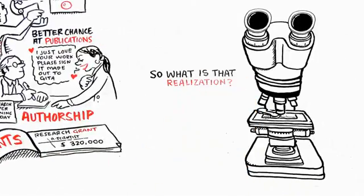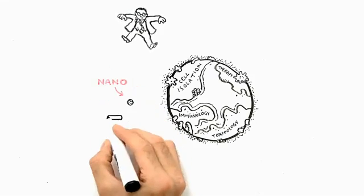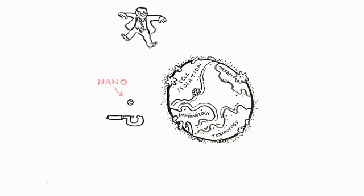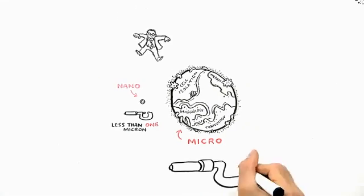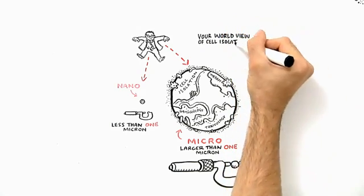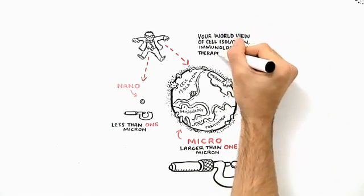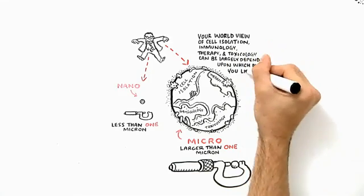So what's this realization? It's not that there is just one, but two worlds of technology when it comes to cell isolation. Two different planets. There is a nano-sized planet where particles we use are usually less than 1 micron, and there is a micro-sized planet where the particles we use are larger than 1 micron. Your view of cell isolation, immunology, therapy, and toxicology can be largely dependent on which planet you live on.